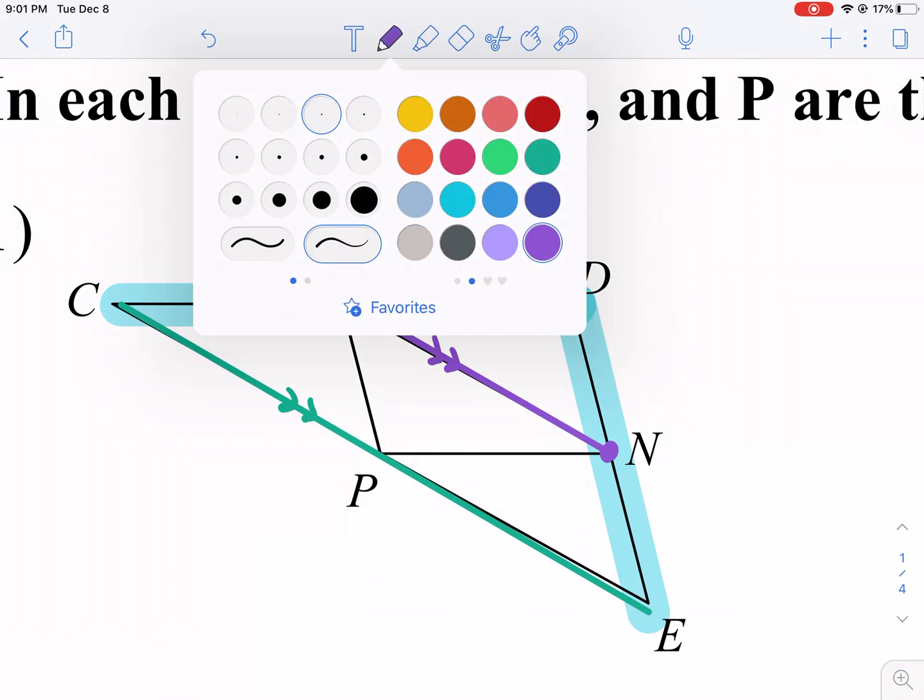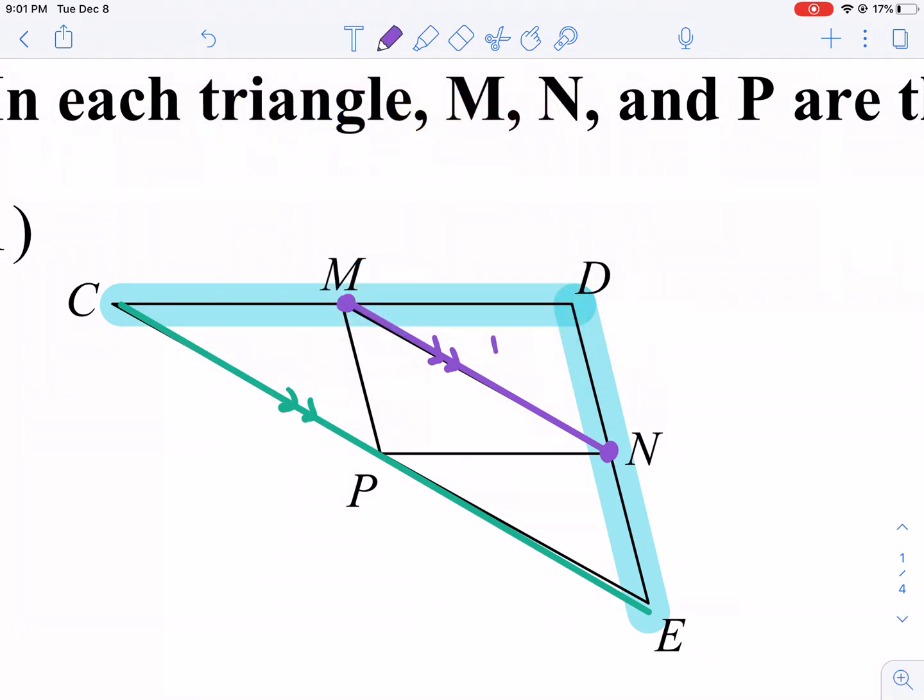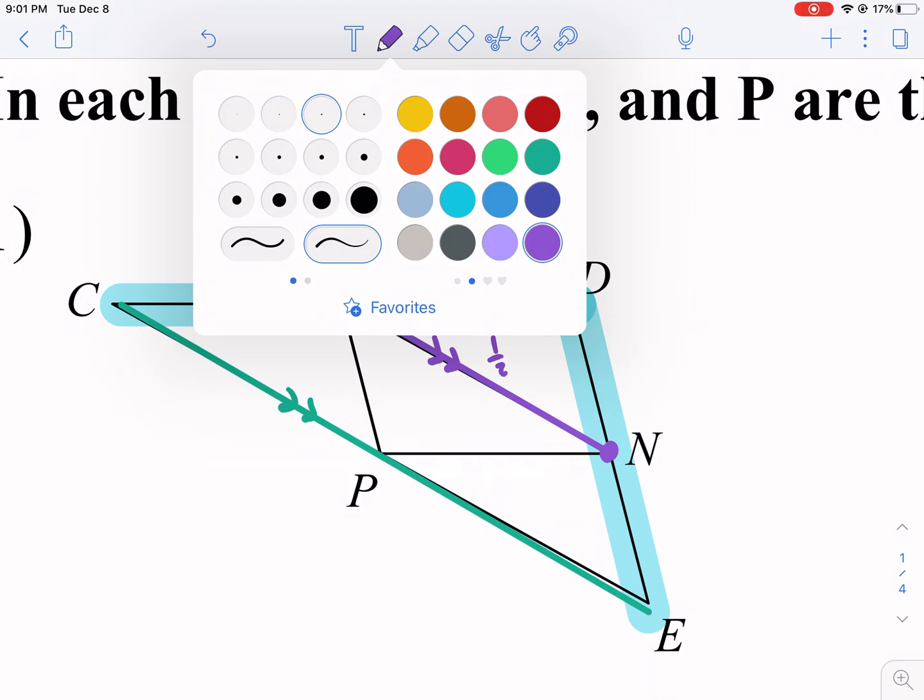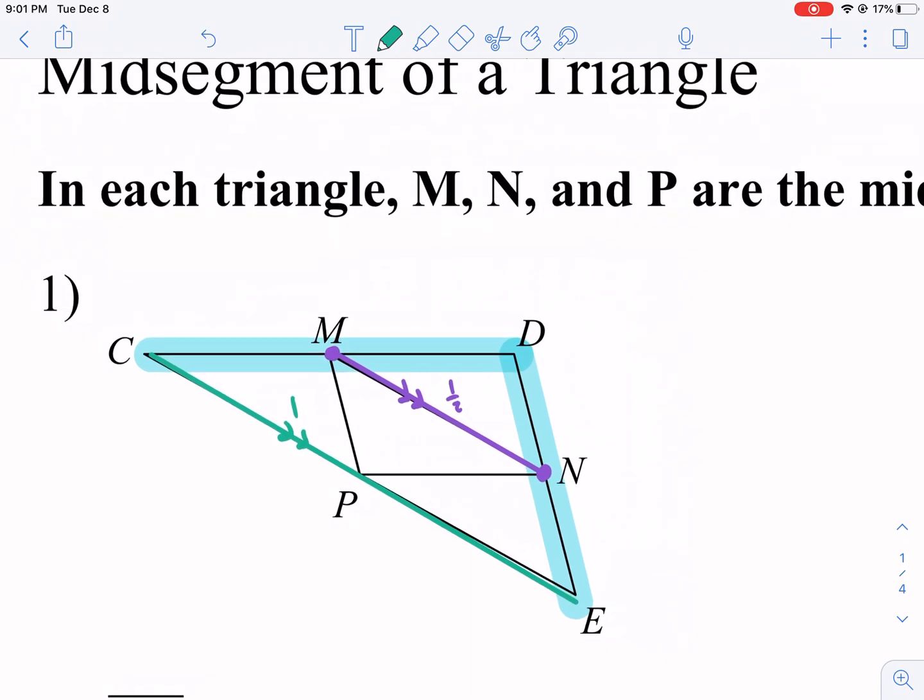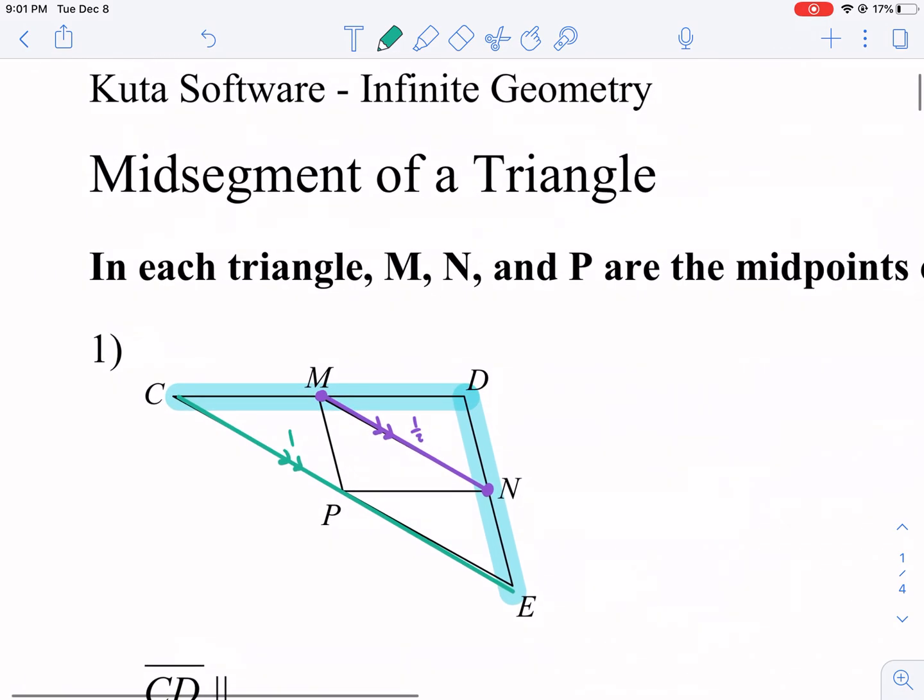And the other property, as the name suggests, is it's half the length of this guy. So this side, if it's a length of one, that would be one half. The green is double the purple, or the purple is half the green.